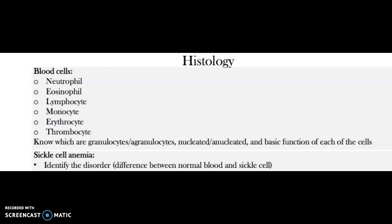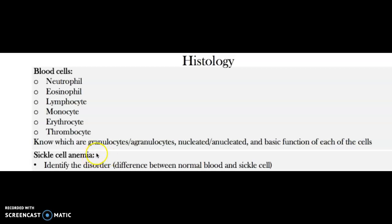In this video, we're going to be working with the histology of the formed elements. Among the cells in our blood, we have red blood cells and we have white blood cells. Among them we have the neutrophils, eosinophils, lymphocytes, monocytes, and we have as well some fragments of cells — thrombocytes or platelets. We're also going to be talking about some disorders for red blood cells such as sickle cell anemia.